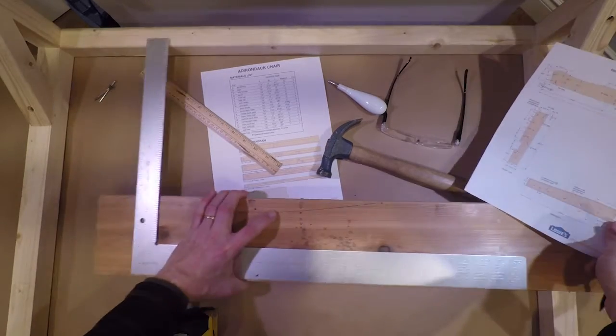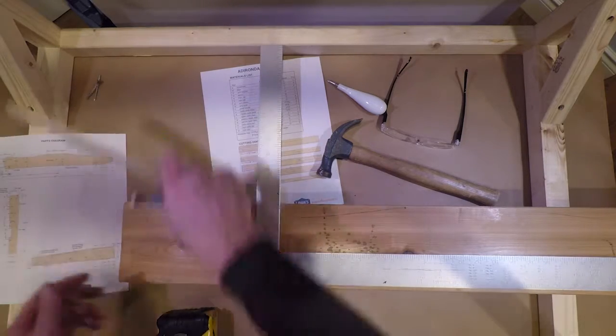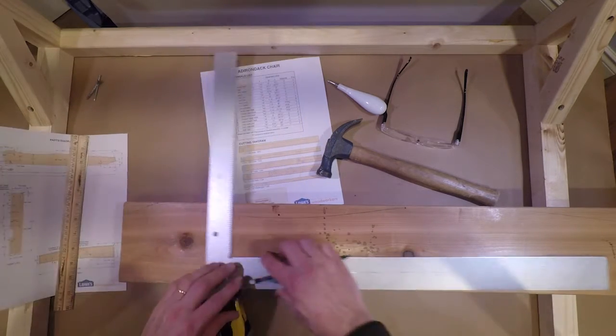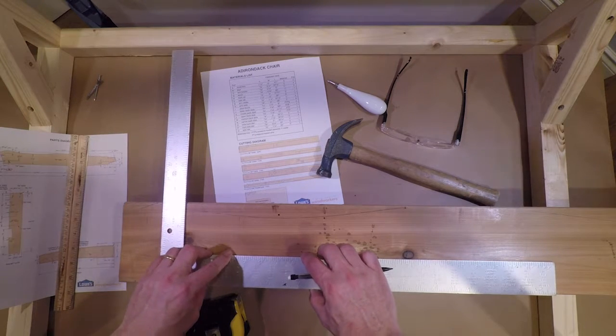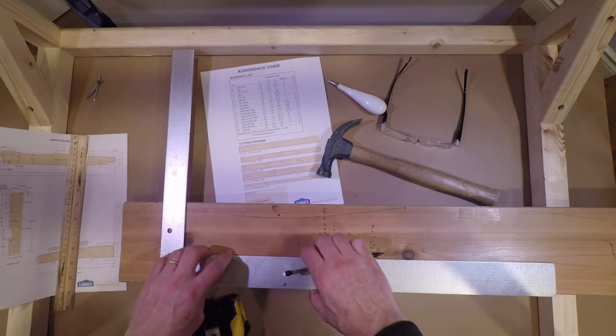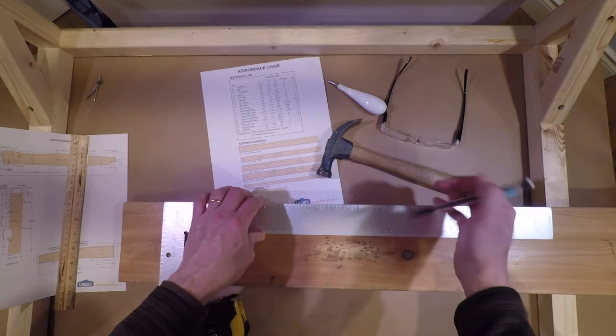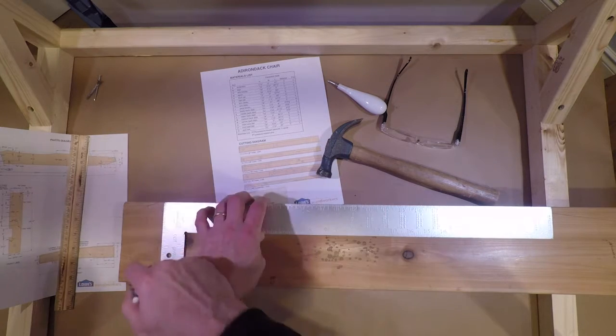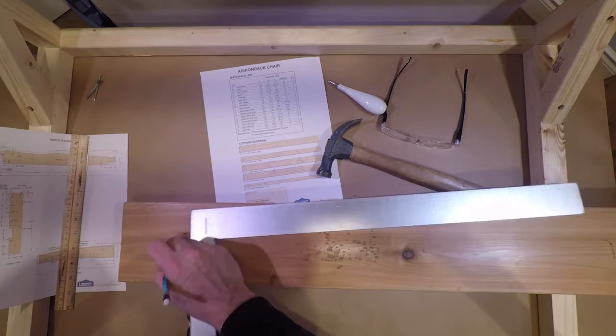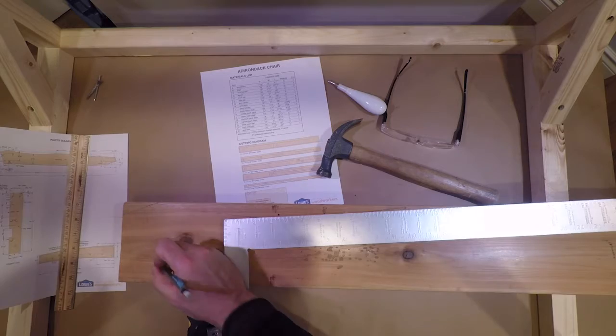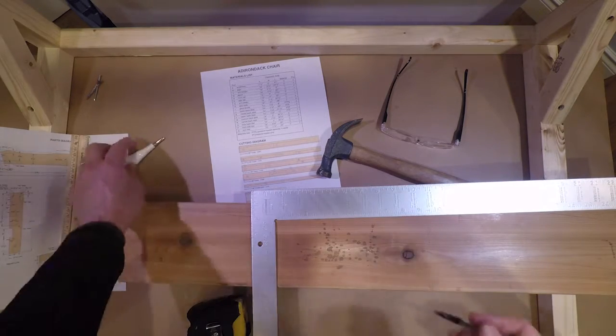That'll get our mark. And we know we're coming three and three quarters down from the top. So square it against the edge. Come down three and three quarters. And we know that's our point for our hole. And we're going to make a little center mark there.